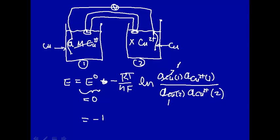So the cell voltage is minus RT over nF times the activity of copper 2 plus side 1 divided by the activity of copper 2 plus side 2. If you know the activity of copper in one side, you can figure out by measuring the cell voltage what the activity is on the other side.